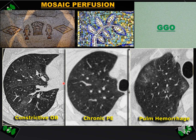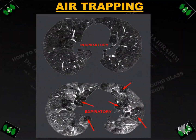How can we differentiate airway disease from vascular disease when mosaic perfusion is identified? We proceed to an expiratory film. The expiratory film will show areas of low attenuation increasing in size and appearing more black on expiration due to airway obstruction. If we find air trapping on the expiratory film, we can diagnose the patient with airway disease, not vascular disease.